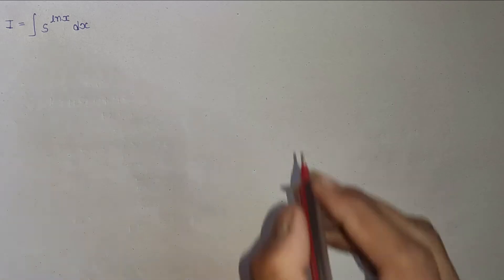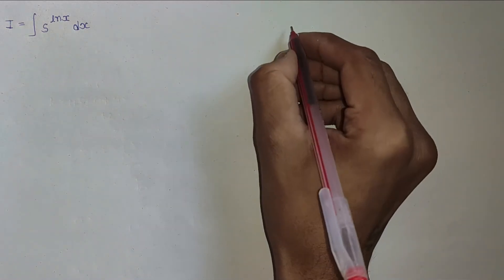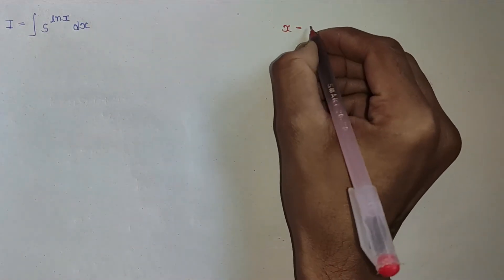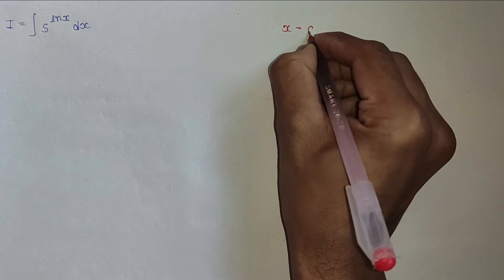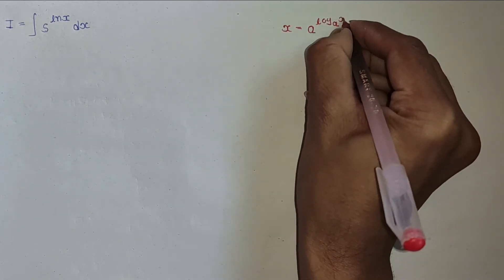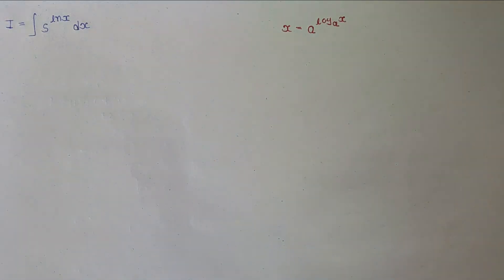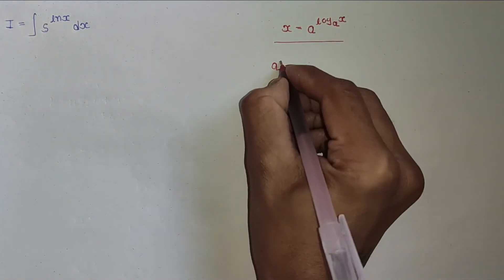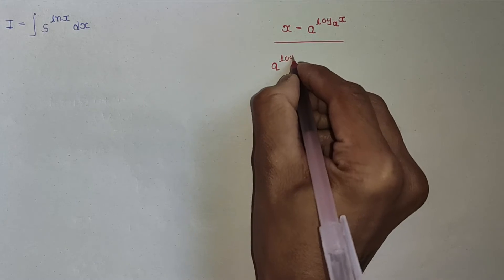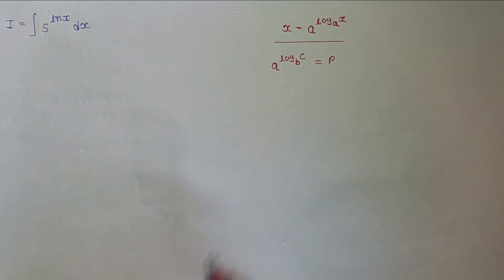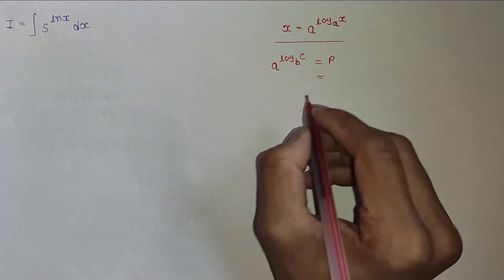First of all, we know x can be written as a^(log_a x). Now if I take a^(log_b c) equal to p, then p can be written as c^(log_b c) · (log_c p).